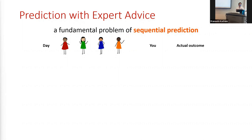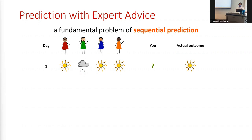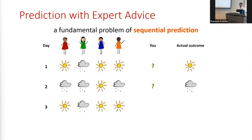On day one, three of the four experts expect the day to be sunny. So as the algorithm, I would say it's probably going to be sunny — and it is indeed sunny that day. We'll utilize that outcome somehow and look at the advice on the next day. On day two, three experts say it's going to be rainy, so the algorithm says rainy — and we're correct. On day three, three experts say sunny, so we think it's sunny, but it turns out to be rainy, so we're wrong.